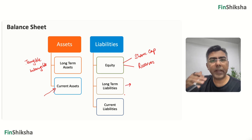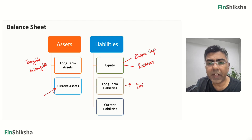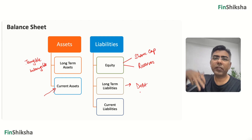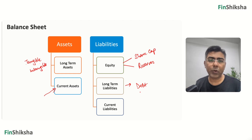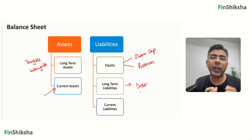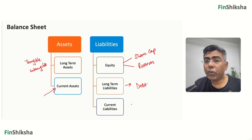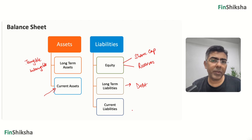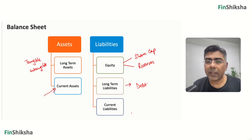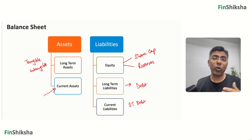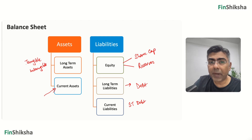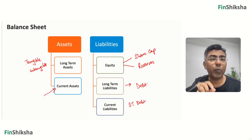Long-term liabilities — examples would be borrowings or debt. If a company takes a five-year borrowing, that will appear as a long-term liability. Current liabilities are short-term liabilities that typically have to be settled within a year or one business cycle. Examples could be short-term borrowings, or a customer advance you've received, or a supplier you've bought goods from but haven't paid yet — that would be a current liability.